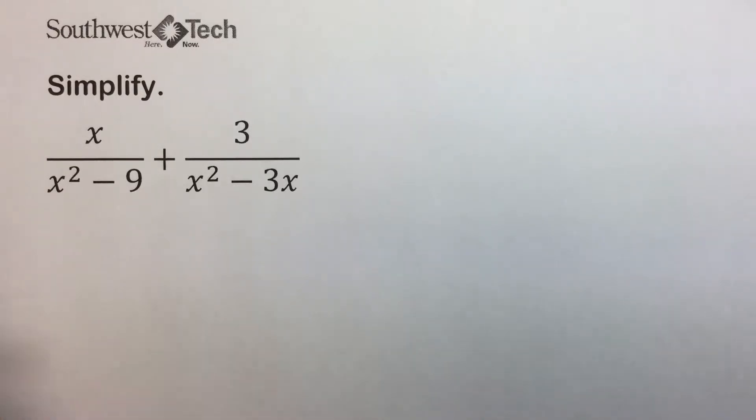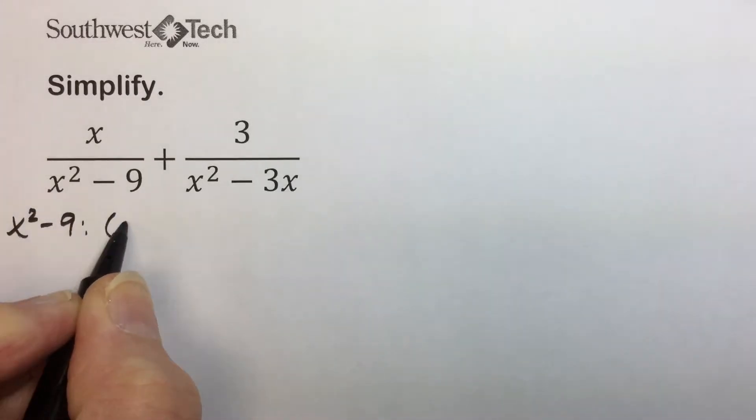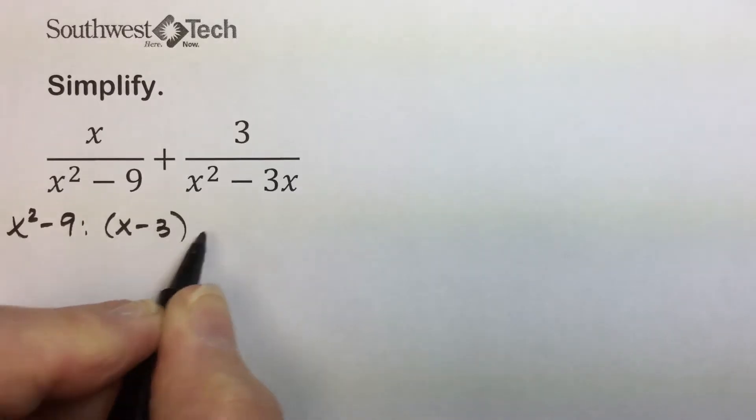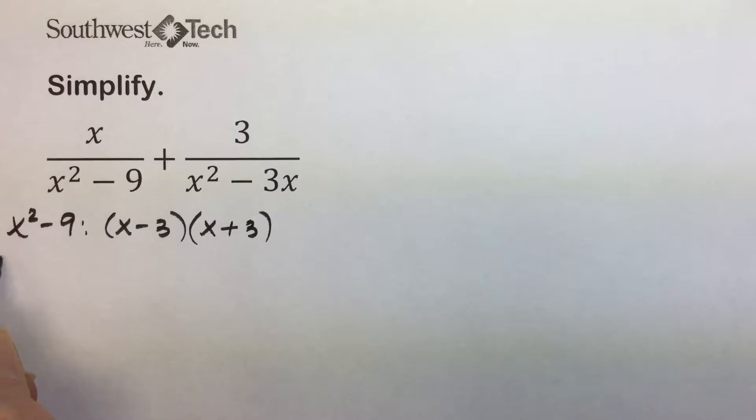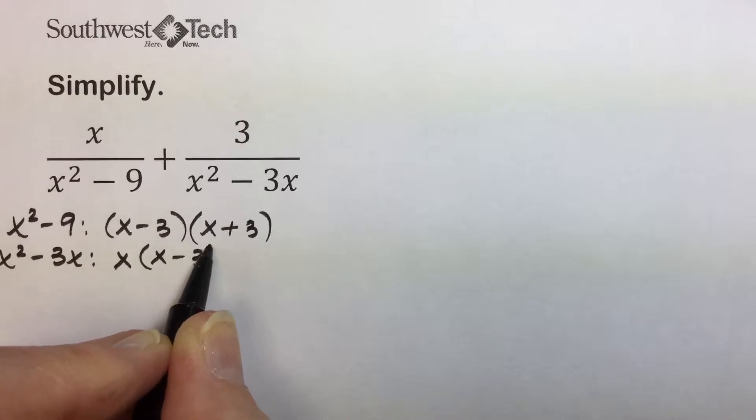We'll factor the first denominator, which factors into a difference of squares, x minus 3 times x plus 3. The other denominator, x squared minus 3x, factors into a largest common factor of x with the remainder of x minus 3.